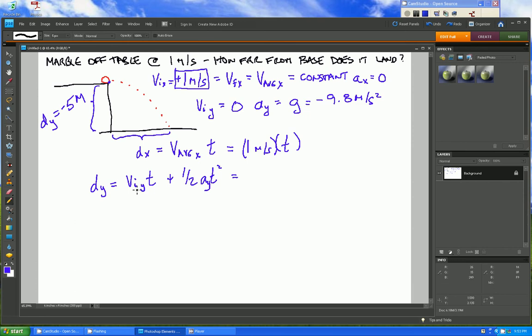Right off the bat we know the initial velocity in the y direction is zero, so this entire term goes away and we're left with distance in the y direction, which is equal to negative five meters, equals one-half negative 9.8 times t squared. Incidentally all the units are in meters and seconds, and as such our final answer will come out in seconds. There's no need to do any conversions. Solve this equation for t.